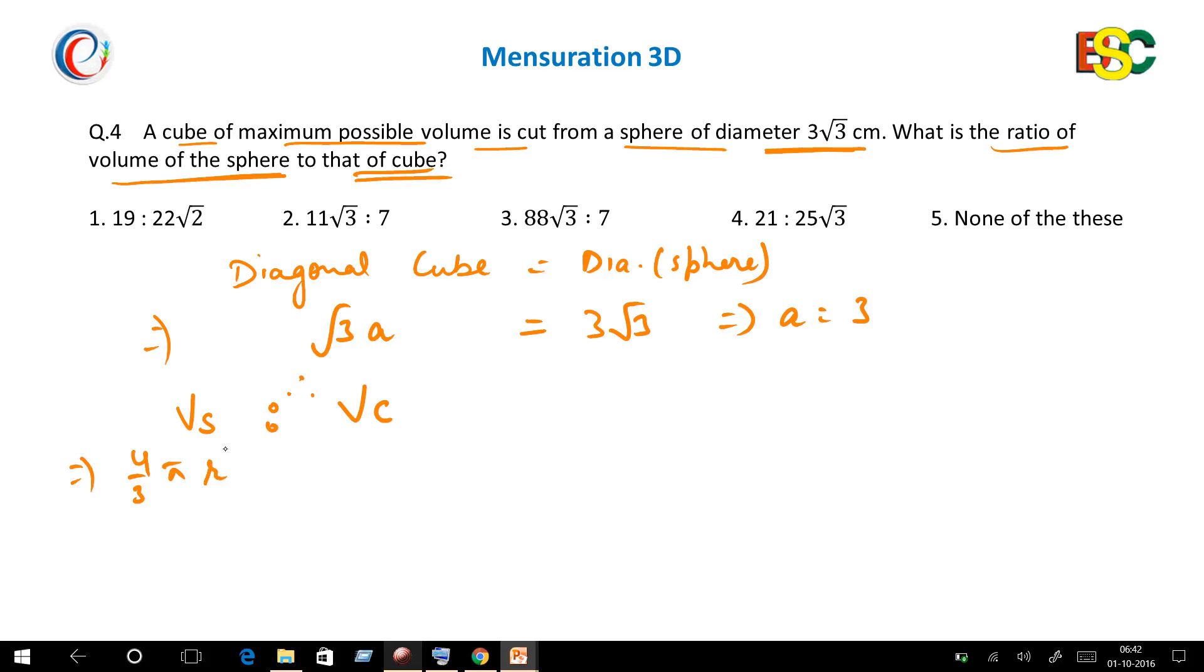It is equal to 4/3 × 22/7 × radius. Since diameter is 3√3, radius becomes 3√3/2, whole cube to a³ which is 3³. Then you cancel this, this 2³ will cancel with 4 here and 2 here.